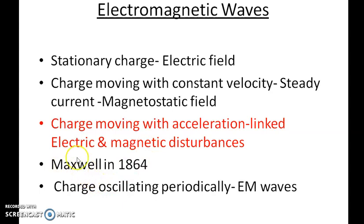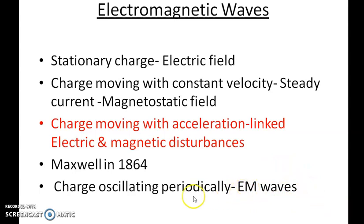This was proposed by Maxwell in 1864. According to him, a charge moving with acceleration produces electric and magnetic disturbances. When the charge is oscillating periodically, we have electric and magnetic disturbances propagating in a periodic nature, and we get an electromagnetic wave. So the source of an electromagnetic wave is a charge oscillating periodically.